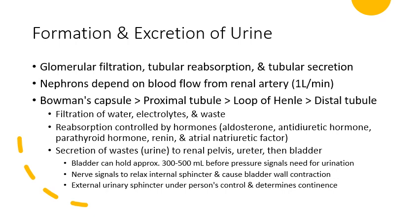After secretion, the waste becomes urine and moves to the renal pelvis, ureter, and then the bladder. The bladder can hold approximately 300 to 500 milliliters before pressure sends a signal to the brain. Nerve signals then relax the internal sphincter, causing the bladder wall to contract, while the external sphincter is under the person's voluntary control. Loss of control of that external sphincter is what determines incontinence.